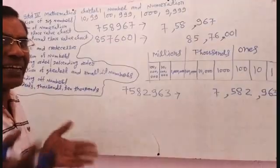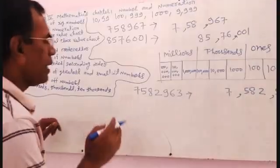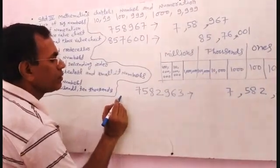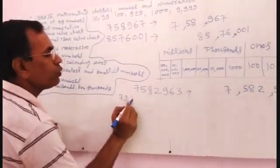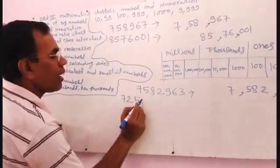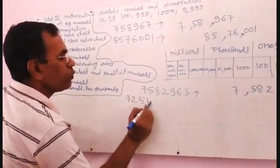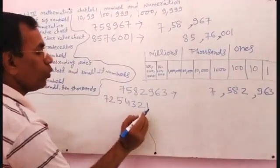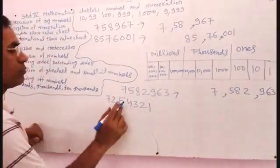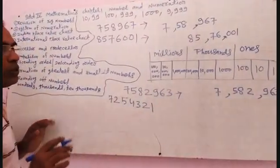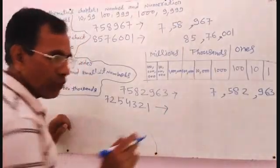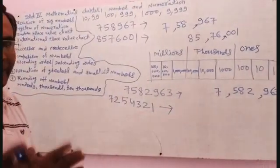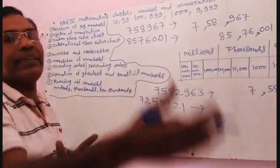You can arrange another number also. This time I am writing: 7, 2, 5, 4, 3, 2, 1. Now I am arranging it.